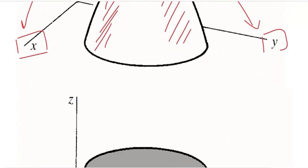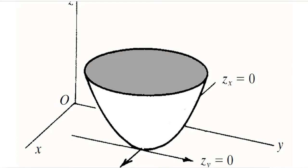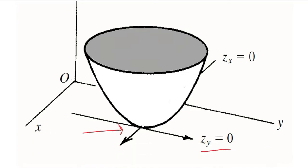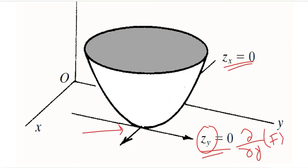We can visualize this another way using a bowl: at the bottom we calculate z_y and z_x, and both will be equal to 0. The derivative of the function with respect to y and the derivative with respect to x must both equal 0 to satisfy the first order condition.